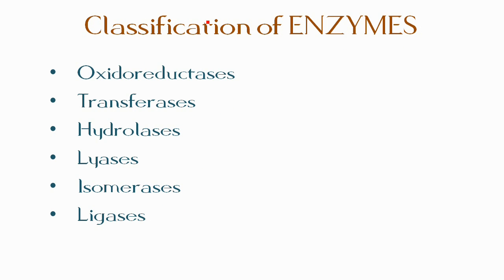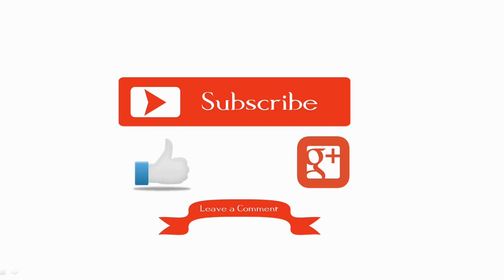To remember the six classes of enzymes in the correct order, the word O-T-H-L-I-L can be memorized, representing the first letter of each enzyme category. That was the basic information about enzymes and their classification. If you like this video, please subscribe and leave a comment for queries and suggestions. Thank you.